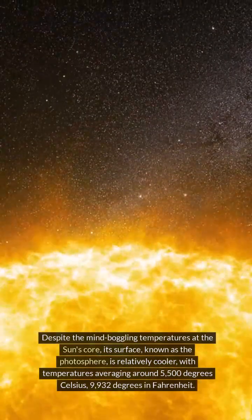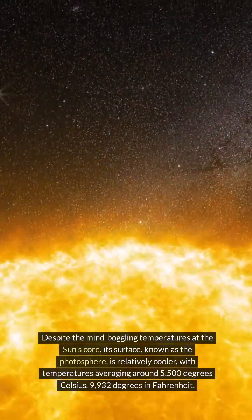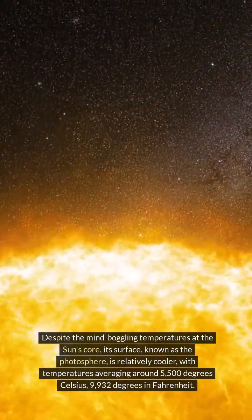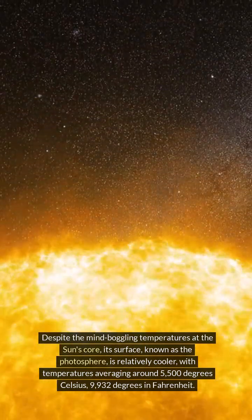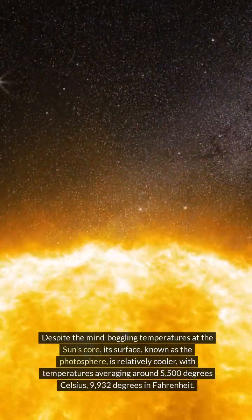Despite the mind-boggling temperatures at the sun's core, its surface, known as the photosphere, is relatively cooler, with temperatures averaging around 5,500 degrees Celsius, 9,932 degrees in Fahrenheit.